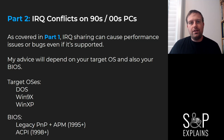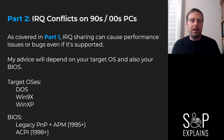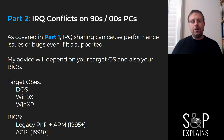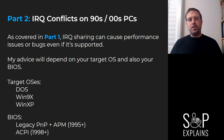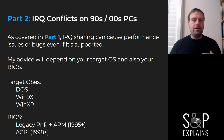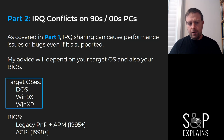We're also going to talk about two kinds of BIOSes primarily. One is the legacy PNP, also called APM BIOS, which is found in early Windows 95-era machines. And then I'm also going to talk about ACPI, which was introduced in the late 90s and really became the gold standard in the early 2000s.